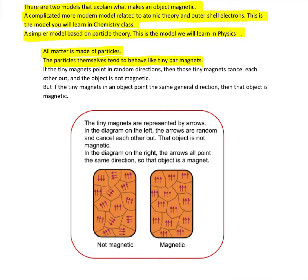What we're going to add is that these tiny particles, the particles themselves behave like little tiny bar magnets. So inside of every material are the particles, and the particles themselves kind of behave like tiny bar magnets. If those tiny bar magnets point in just completely random directions, then those tiny magnets kind of cancel each other out, and that object isn't magnetic. But if we've got a material where the tiny magnets, these tiny particles all generally point in the same direction, then the bigger object is a magnet.